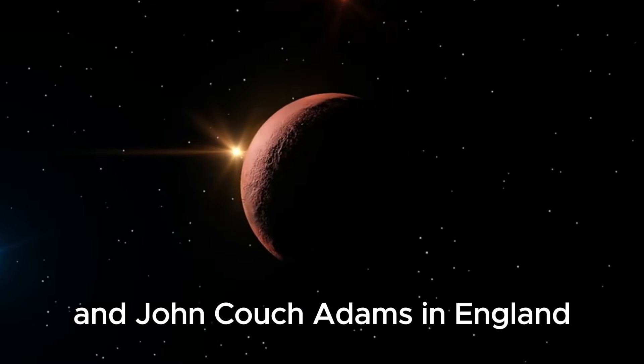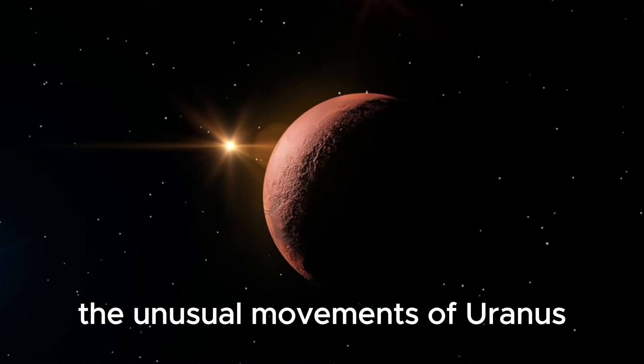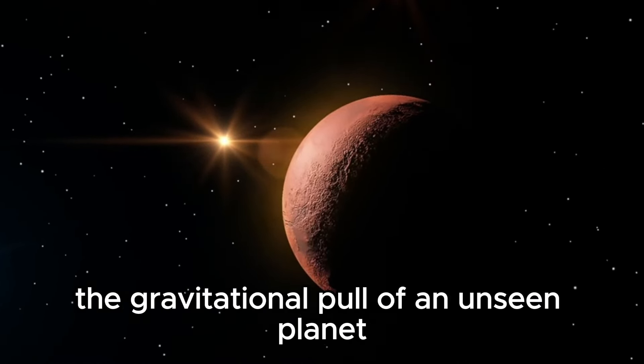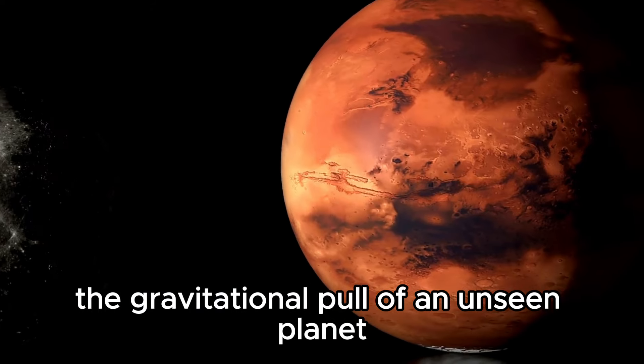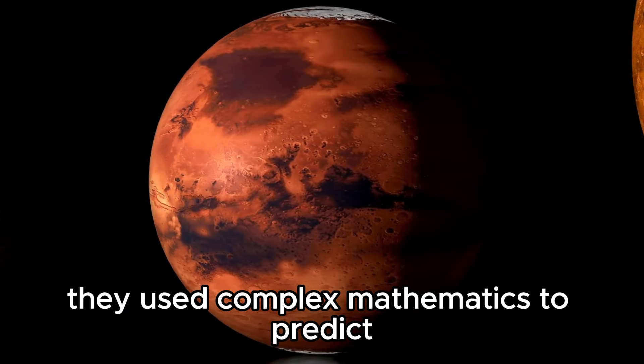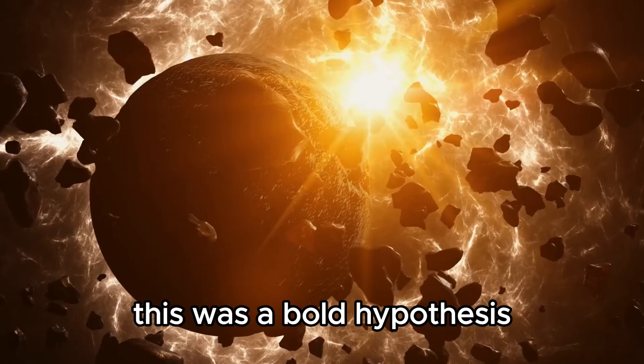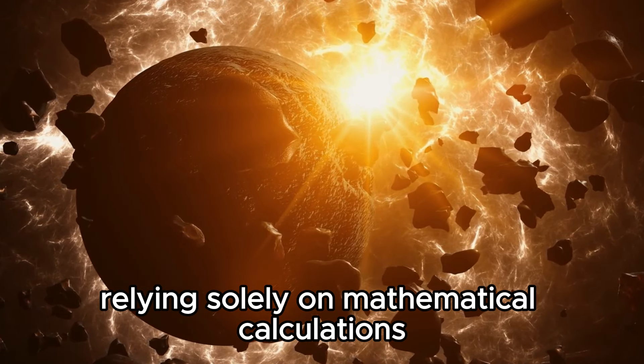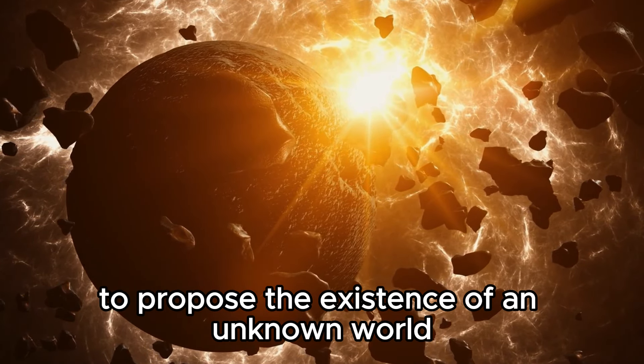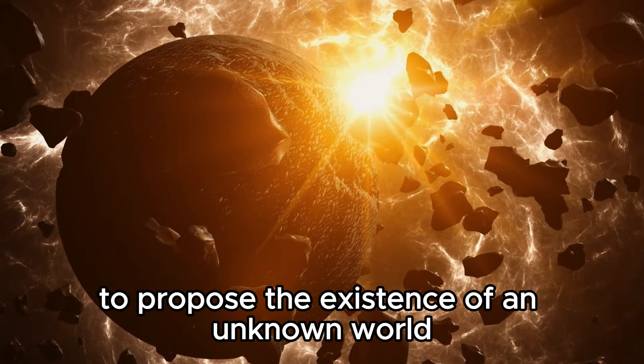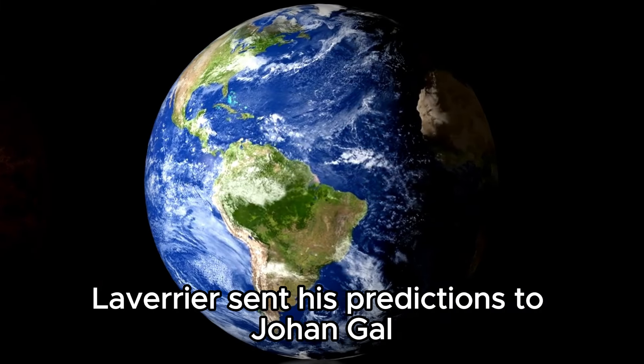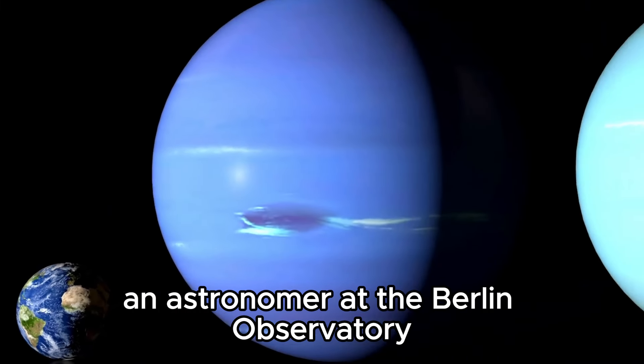In the 1840s, two mathematicians, Urbain LeVerrier in France and John Couch Adams in England, independently suggested that the unusual movements of Uranus could be caused by the gravitational pull of an unseen planet. They used complex mathematics to predict where this invisible planet might be located. This was a bold hypothesis, relying solely on mathematical calculations to propose the existence of an unknown world.